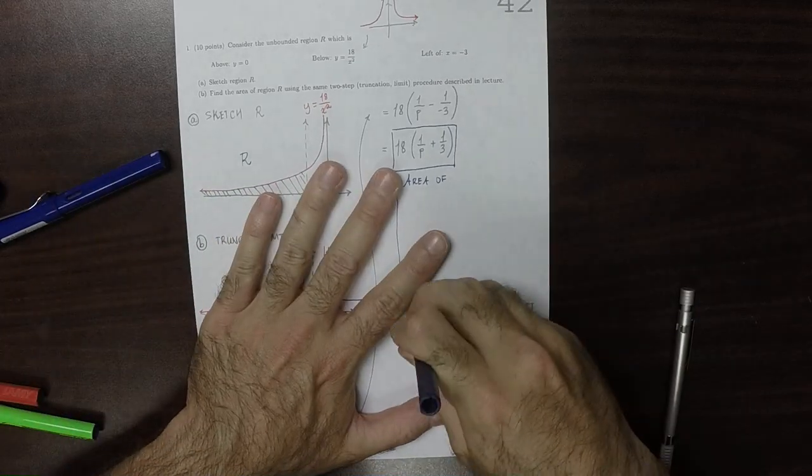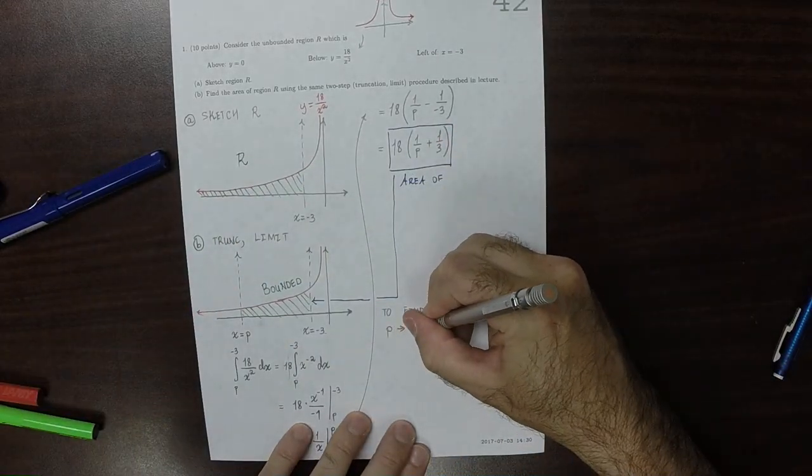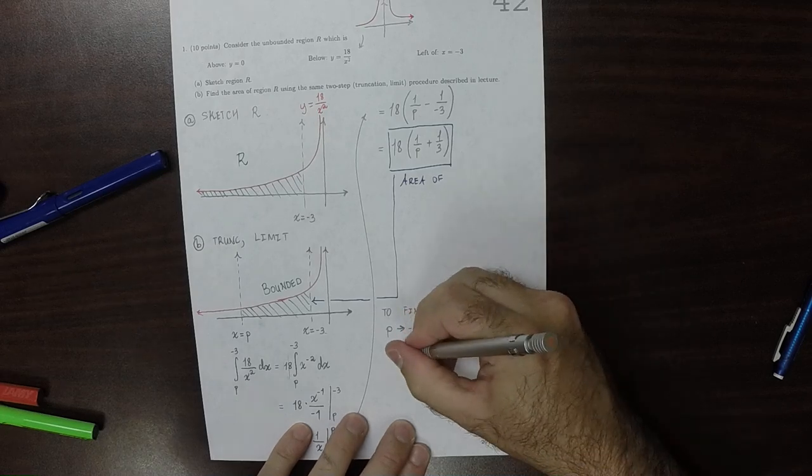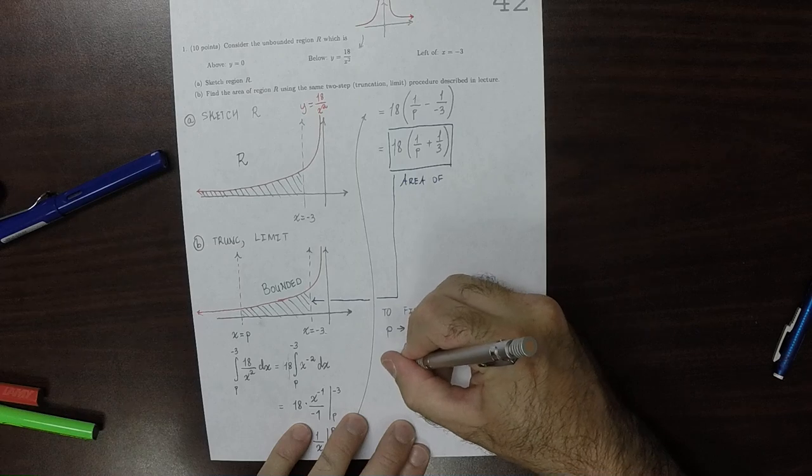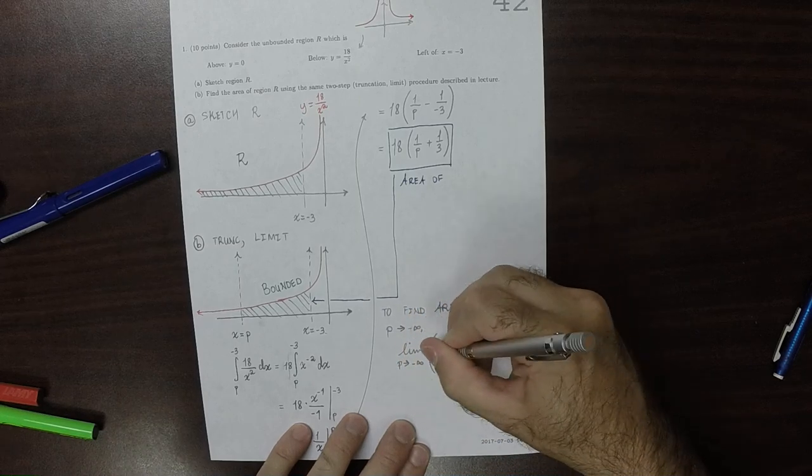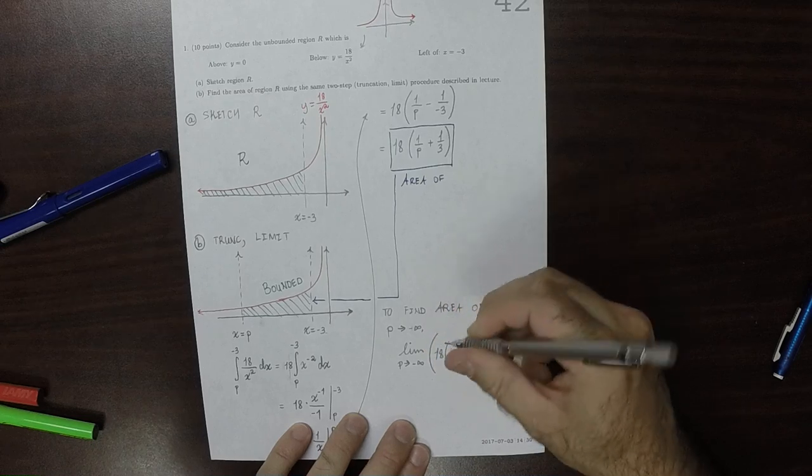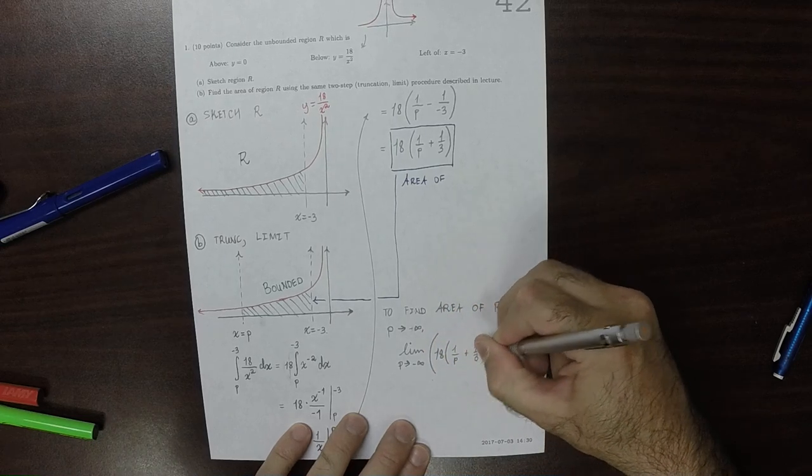That is to say, negative infinity. Right? All the way to the left. So the limit as P goes to negative infinity of 18 times 1 over P plus 1 over 3.